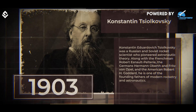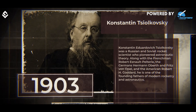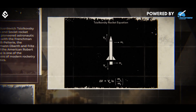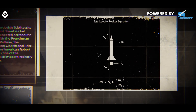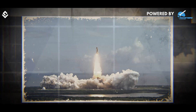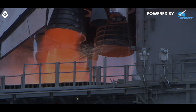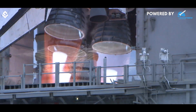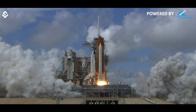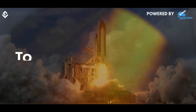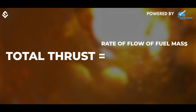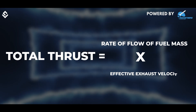In 1903, Russian scientist Konstantin Tsiolkovsky derived what is famously known as the Tsiolkovsky rocket equation or ideal rocket equation, a mathematical equation that describes the motion of a vehicle during rocket-like flight. The first requirement is the thrust force produced due to the ejection of burned fuel at high speed, which pushes the rocket in the opposite direction. Total thrust acting on the rocket equals the product of the rate of flow of fuel mass and effective exhaust velocity.